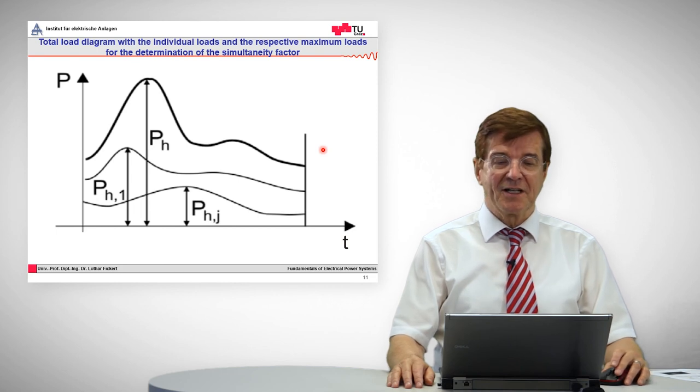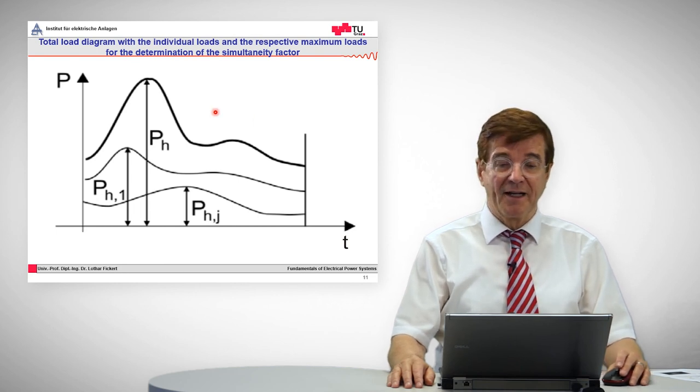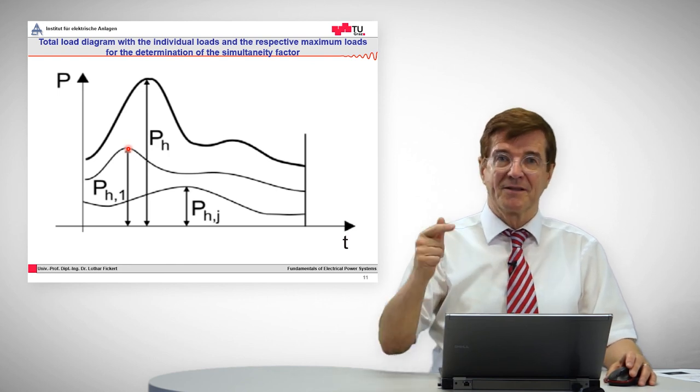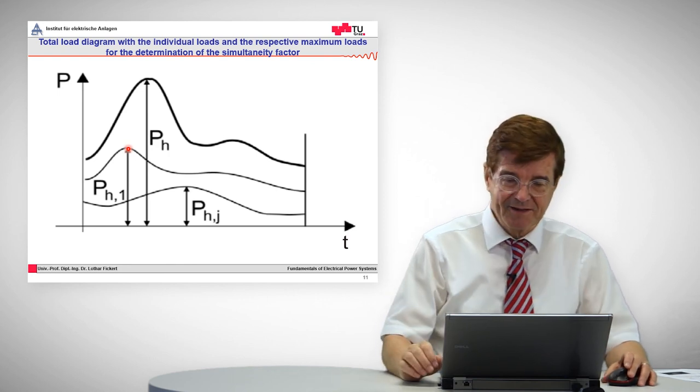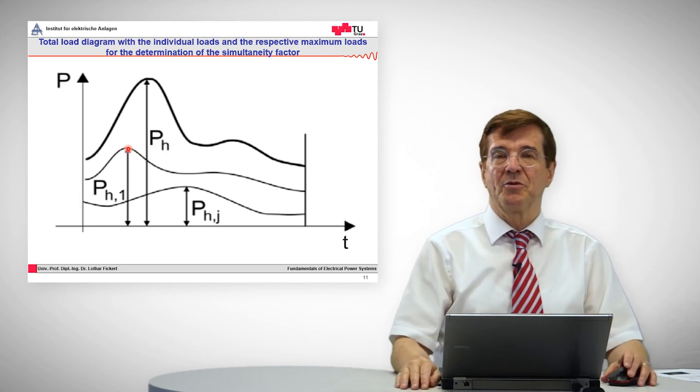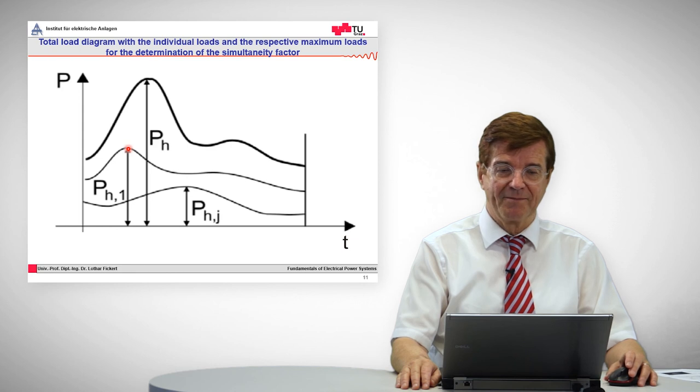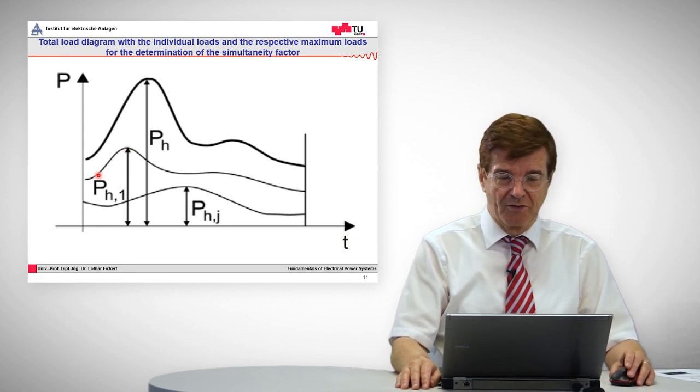When electrical loads are superimposed, and this is important to have the correct rating of all the cables, overhead lines, transformers, then you must determine what is the maximum load that this electrical grid has to supply. So if we have, for example, two loads, one has a peak in the morning, for example, a bakery,